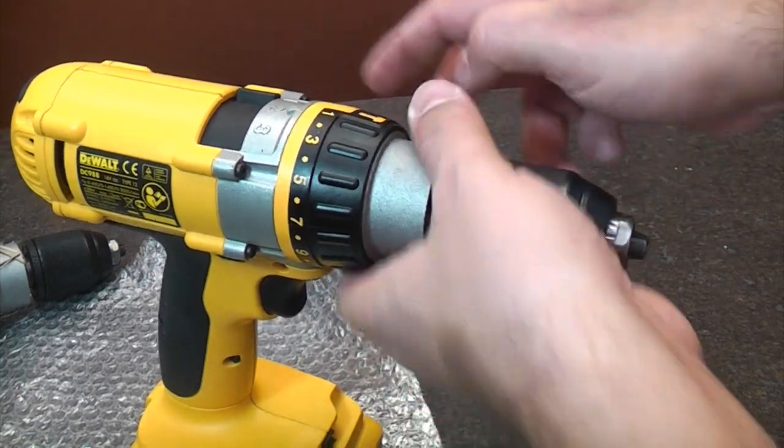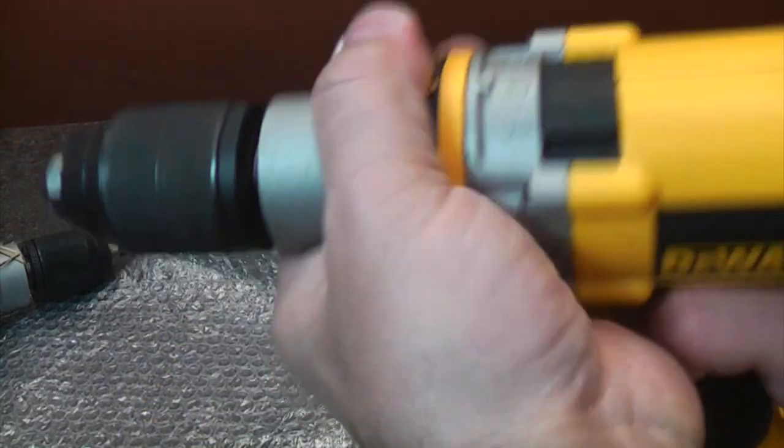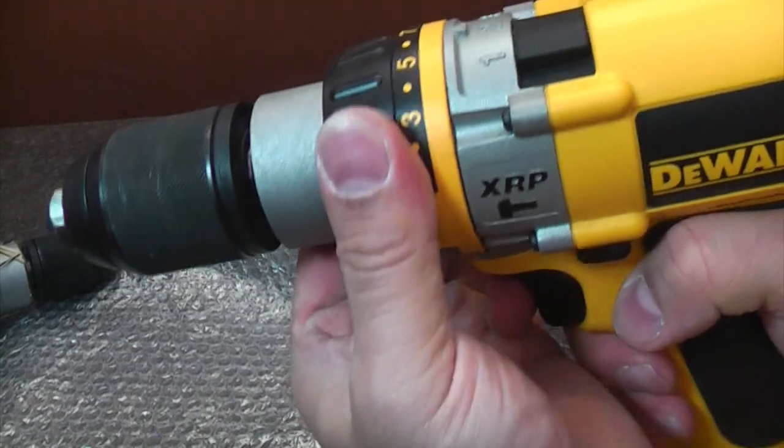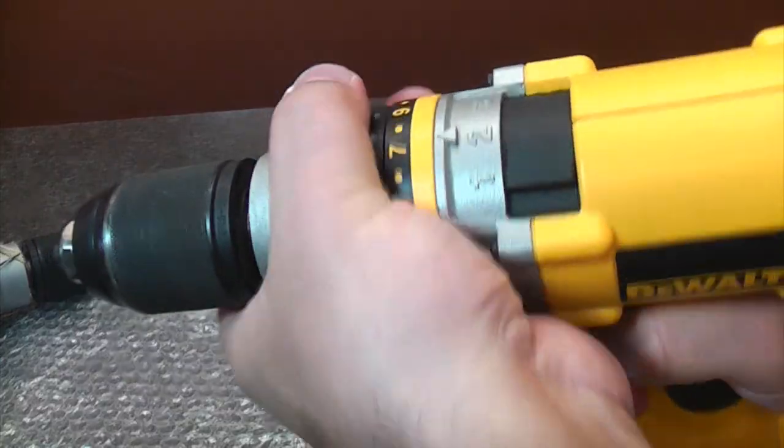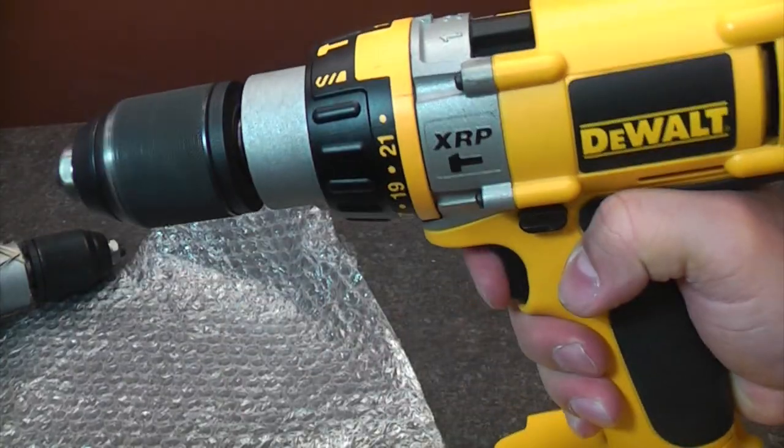So we now tighten up the four screws, and we've now successfully changed the torque control unit on the drill.